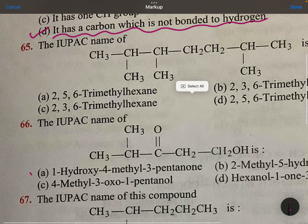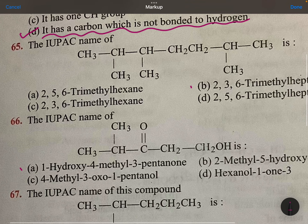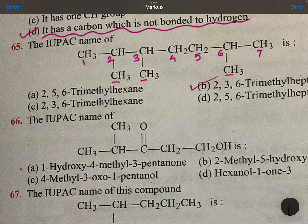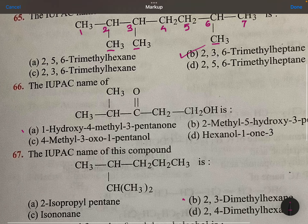The IUPAC name: go from this side — 1, 2, 3, 4, 5, 6, 7 — second place methyl, third place methyl, sixth place methyl: 2,3,6-trimethylheptane.